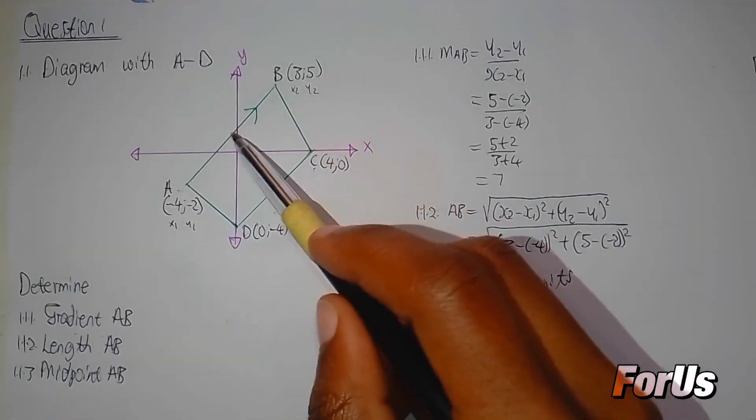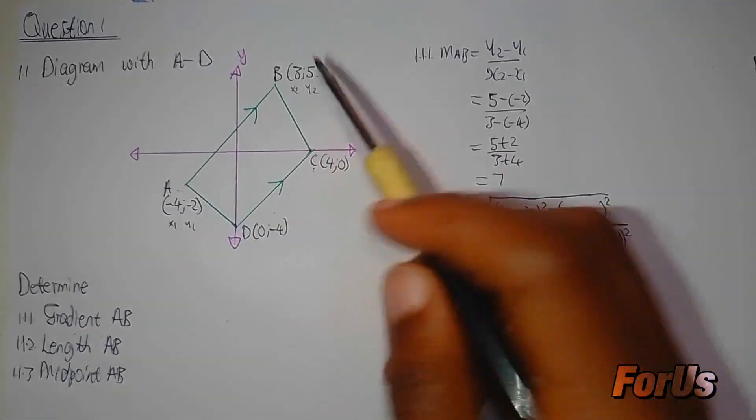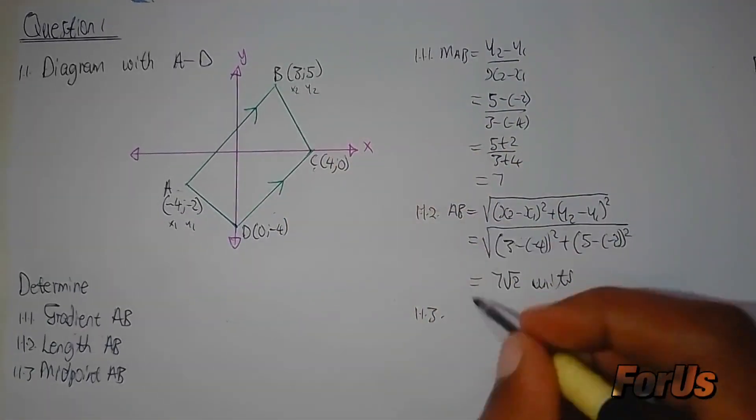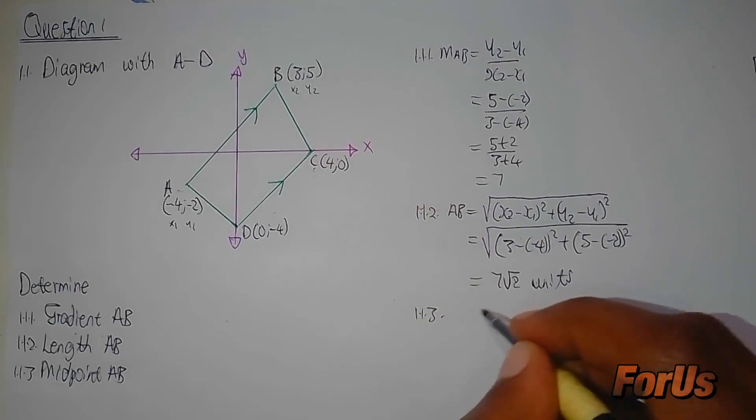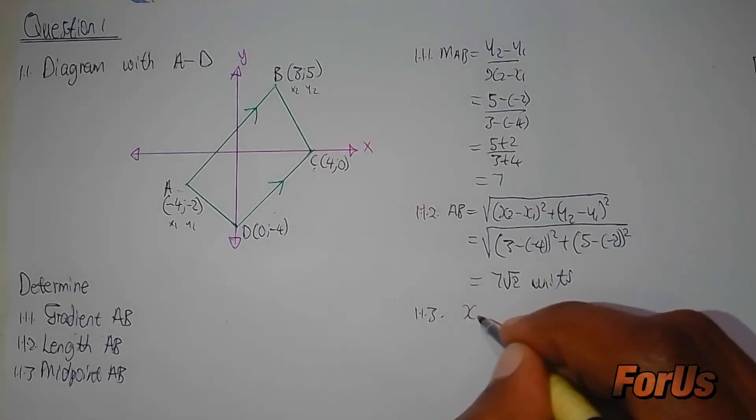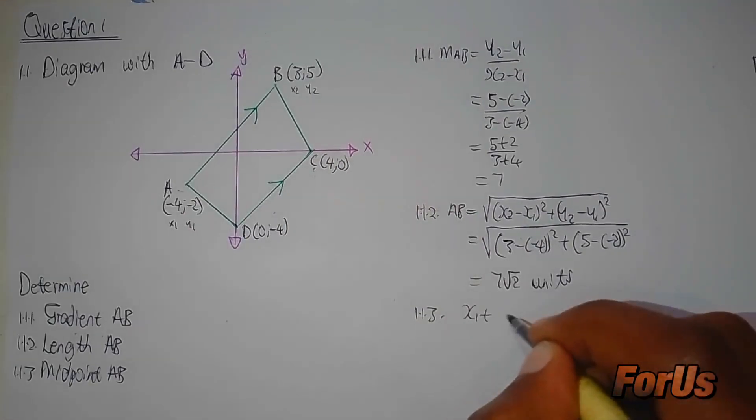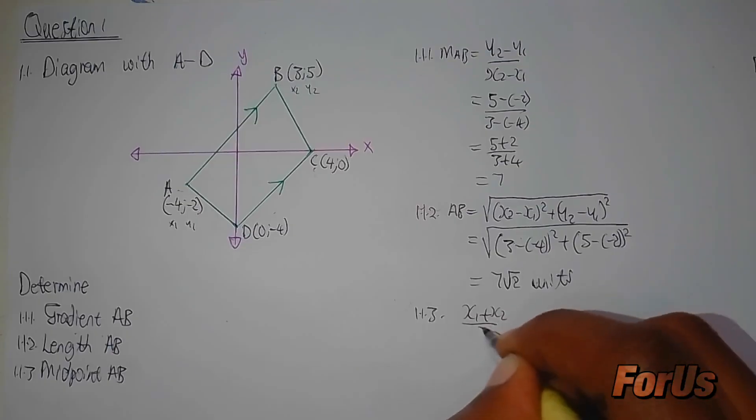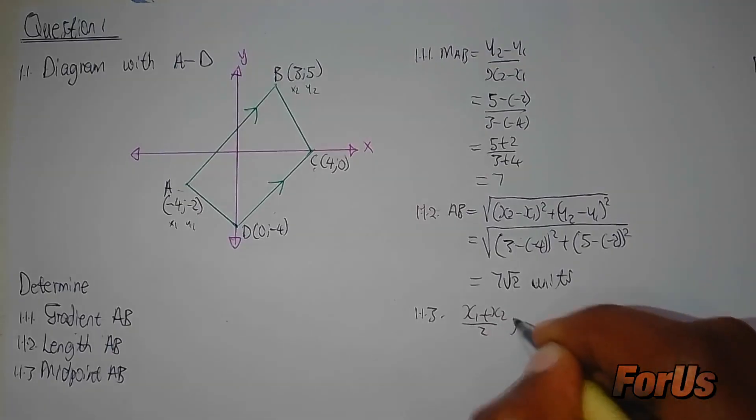Now for question 1.1.3, it asks for the midpoint of AB. I want the point at the center of this line. We use the midpoint formula: x1 plus x2 divided by 2, and y1 plus y2 divided by 2.